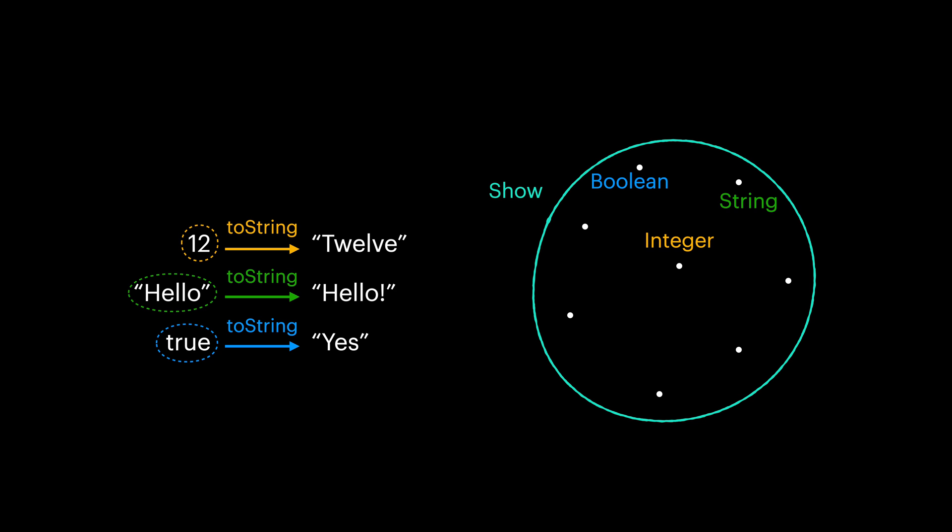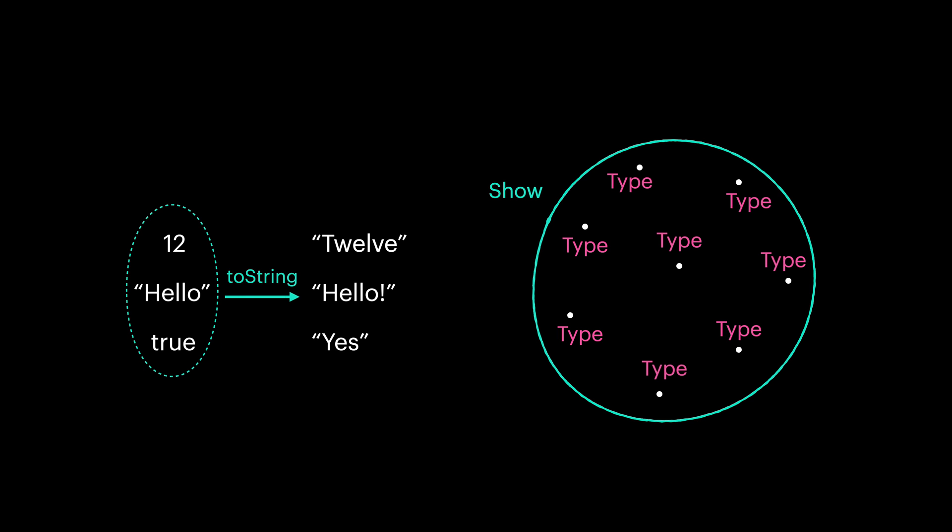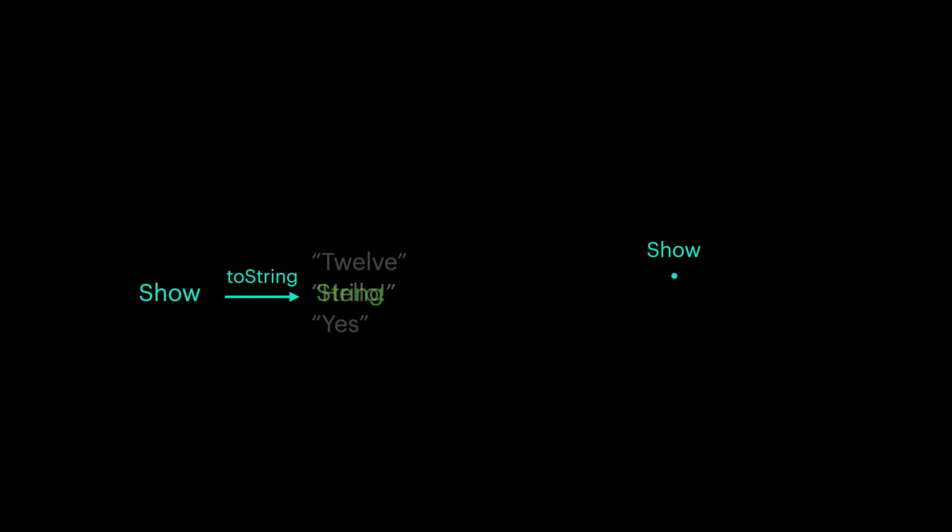So instead of thinking at the type level, let's try to think at the kind level. So rather than looking at these as integer, boolean and a string, we can see them as quote unquote type in the kind universe. Now we can simplify our diagram. We can simply say we only need one polymorphic toString that works on any type that is inside our show circle. And by doing so, since everything inside the show circle looks the same, we can now think of show as a single entity and simplify our definition of toString.